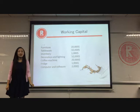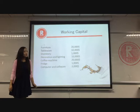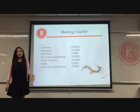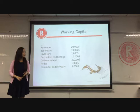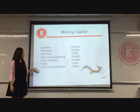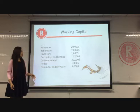Our working capital covers: furniture at around $20,000; tableware such as cups and spoons at around $10,000; and other inventory including decoration, lighting, machines, fridges, and coffee shop equipment at around $20,000 to $30,000.